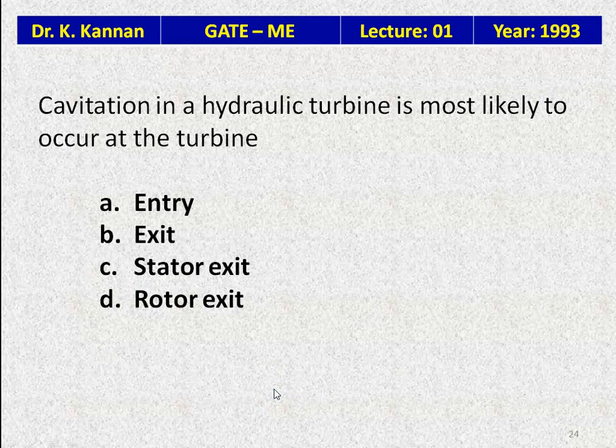Question 23: Cavitation in a hydraulic turbine is most likely to occur at — turbine exit, draft tube exit, or rotor exit. The correct answer is rotor exit — cavitation will occur at the rotor exit of the hydraulic turbine.